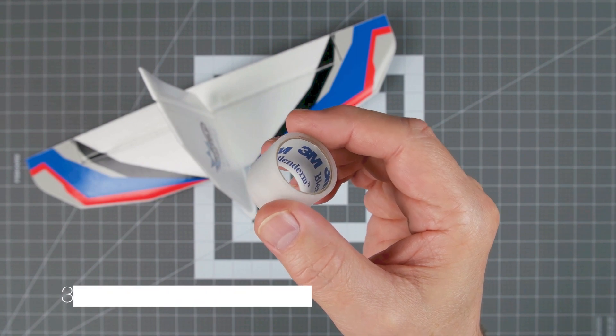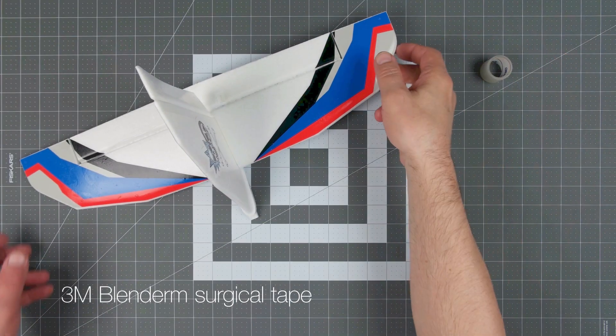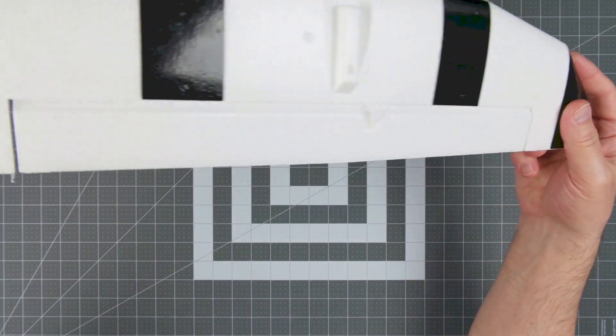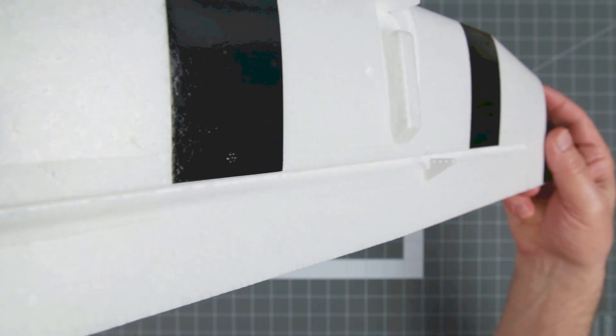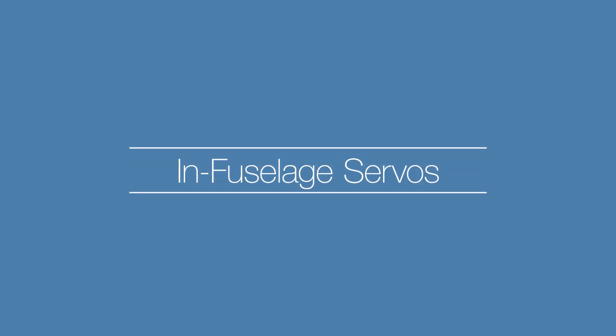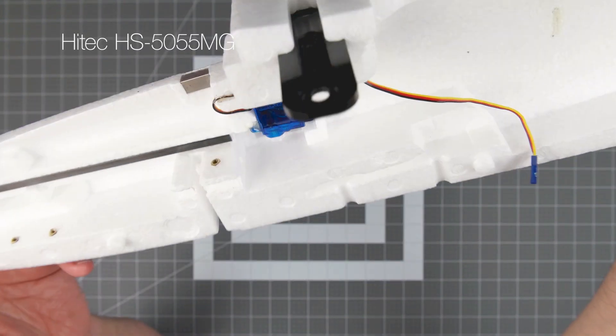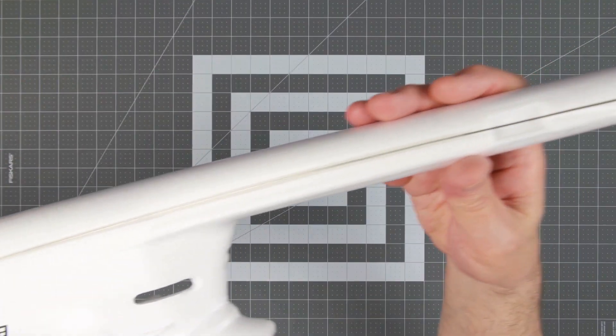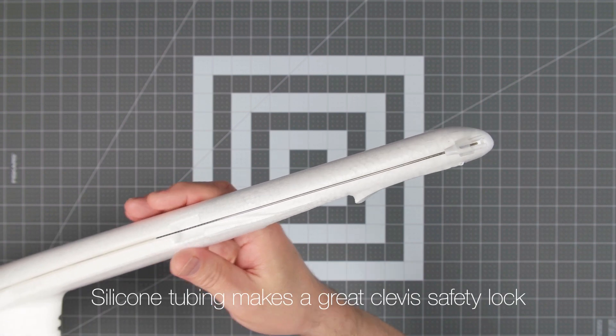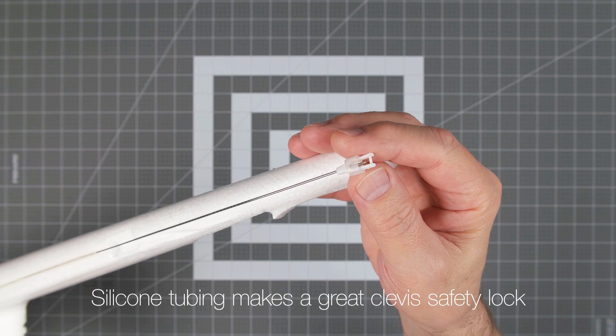Foam hinges will eventually wear out and begin to tear, and one way to help mitigate that is by adding a bit of Blenderm tape to reinforce the hinge line. It's lightweight, and on white foam it's nearly invisible. I used TowerPro digital servos in the wings, but I chose to use these high-tech digital servos for the elevator and rudder because I already had them on hand. They all have metal gears, and the operation of both the TowerPro's and the high-techs seemed equally smooth.